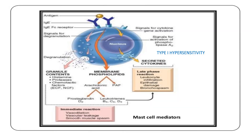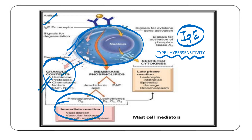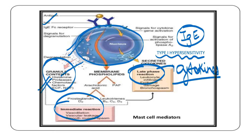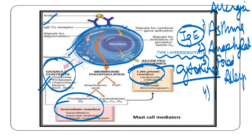Now let's start. The first slide covers type 1 hypersensitivity reaction. It is IgE mediated, and IgE will be located on the mast cells. When activated in allergic reactions, mast cells release granules leading to an immediate type of reaction, while the late phase reaction is due to cytokines. The four examples of type 1 are: A for asthma, anaphylactic reaction, food allergy, and hay fever.